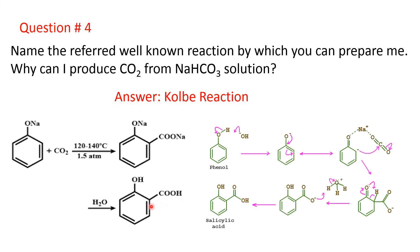Now let's see the mechanism of the Kolbe reaction. The hydroxyl ion takes H⁺ and forms the phenoxide ion. The phenoxide ion participates in resonance with the benzene ring, so the electron pair comes to the ortho position. This negative charge from the ortho position gets attached to the carbon atom of carbon dioxide, and the CO₂ gets attached at the ortho position with respect to the phenoxide oxygen of the benzene ring. This intermediate ion, on acidification, takes up H⁺ and gives salicylic acid.